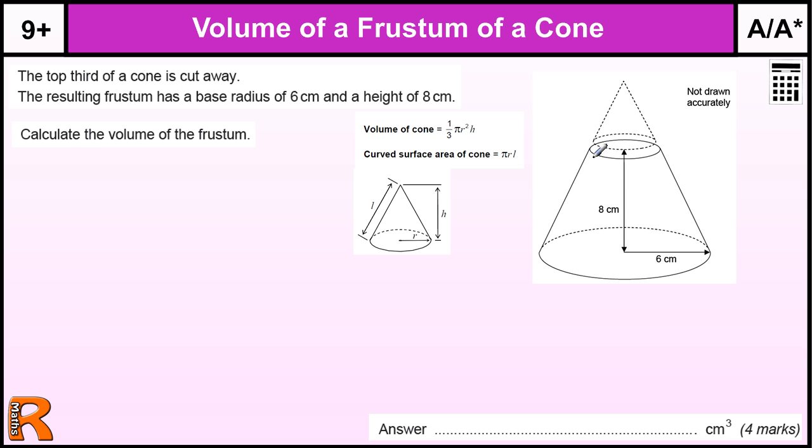Now, a frustum of a cone is just a big cone with a small cone chopped off the top. So, if we just work out the volume of the big cone, the volume of the small cone, then we can work out the volume of the frustum.